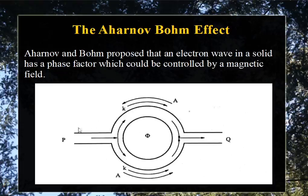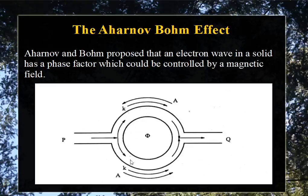The electron waves coming from the waveguide to the left terminal are split into two waves of equal amplitudes. These two waves go around the two halves of the ring — that is, through the upper arm and through the lower arm. Finally, they leave through the right terminal, that is through port Q.